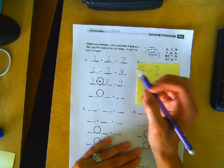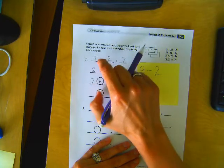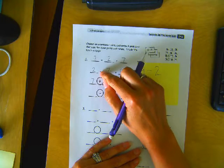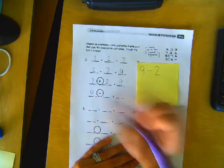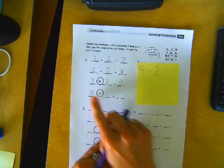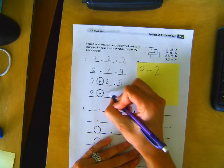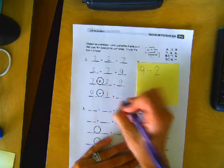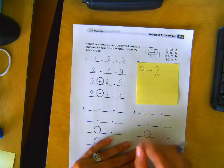Now, each fact family has two addition number sentences and two subtraction number sentences. So we know that this one's going to have to be subtraction because we already have two addition ones. We also know in subtraction that we start with the biggest number first. So up here we had 9 minus 2. Now what could we do? 9 minus, well, let's do the 7 because we haven't done it that way yet. So 9 minus 7 equals, and that's going to equal the last number that we haven't used yet, and that's 2. Does that make sense?